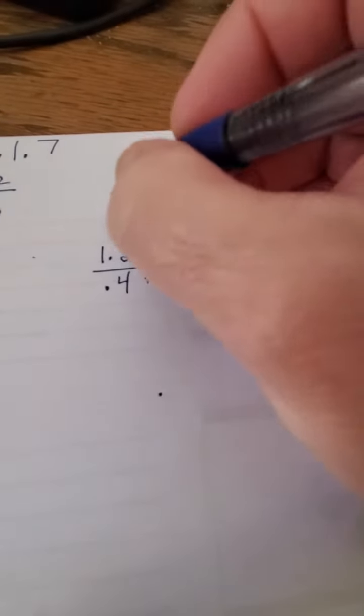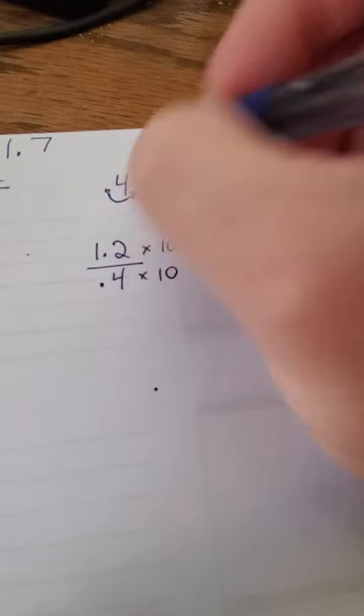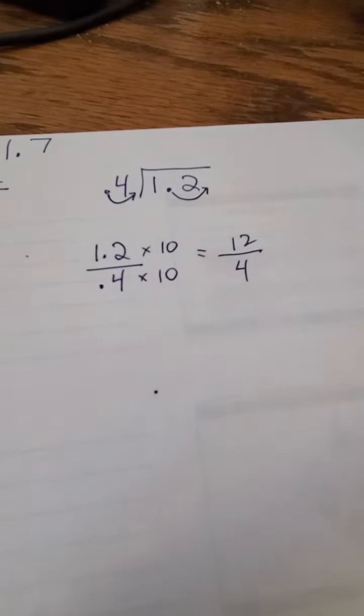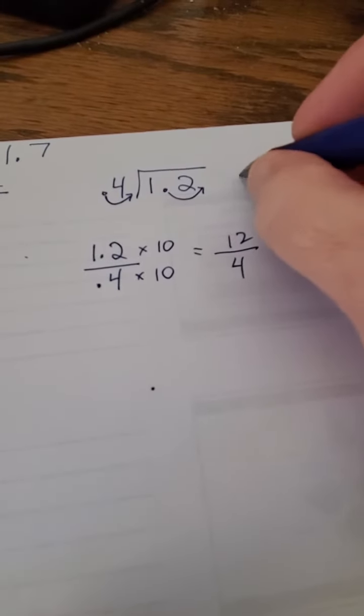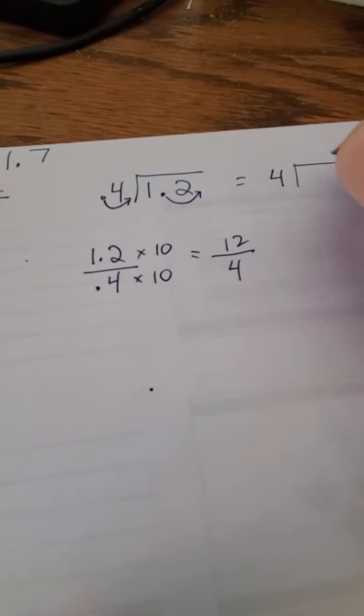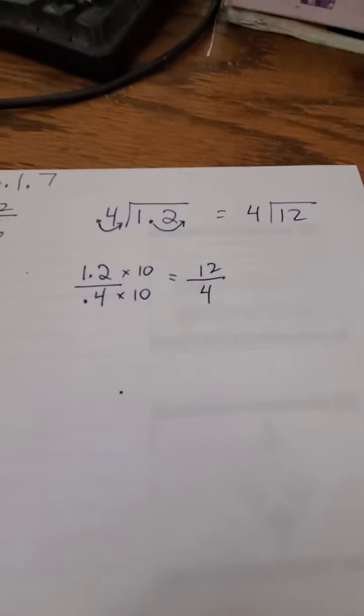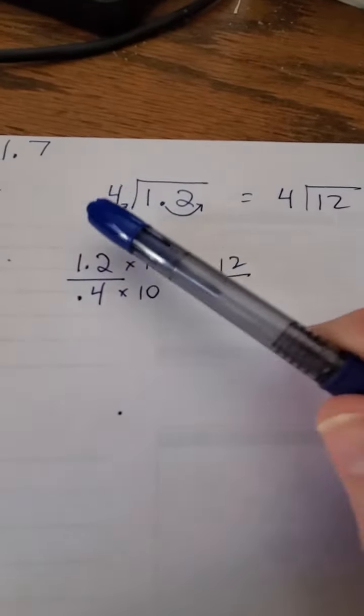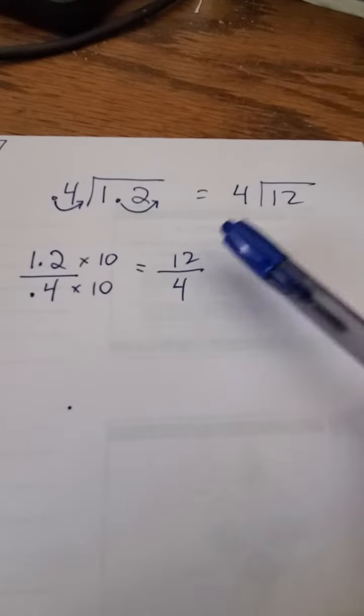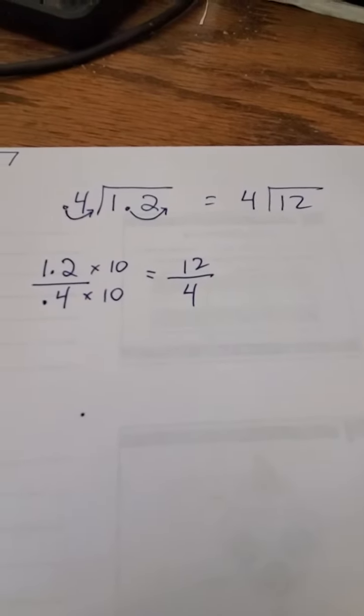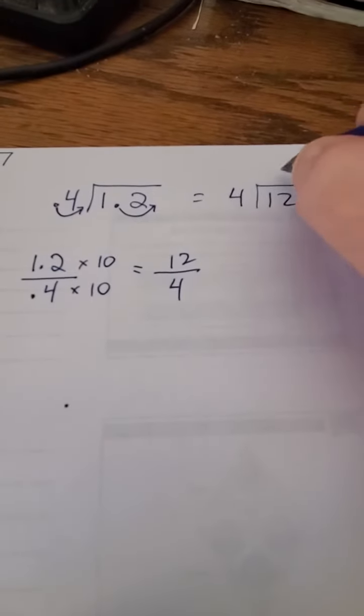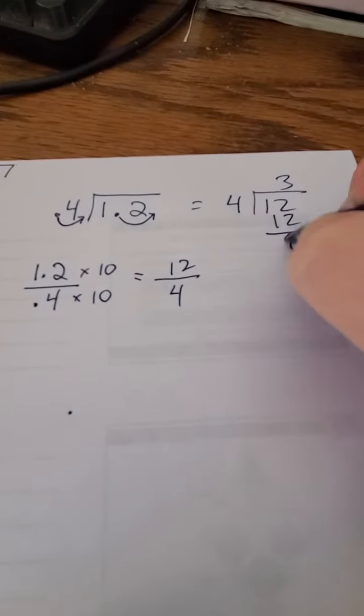Now, the quick way of doing it is just say, I have to move this one spot, so I move that one spot. That really winds up being the same thing. And this is equal to 4 into 12. So my original problem, 1.2 divided by 0.4, is equivalent to just 12 divided by 4. That's a regular division, which we know how to do, and that's just 3. And we're done.